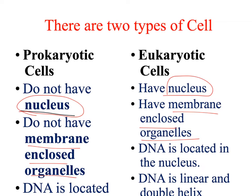Prokaryotic cell DNA is circular, but eukaryotic cell DNA has a double helix structure and is linear. The only organelle in prokaryotes is the ribosome, but there are many organelles in eukaryotic cells, and ribosomes are also present in eukaryotic cells.